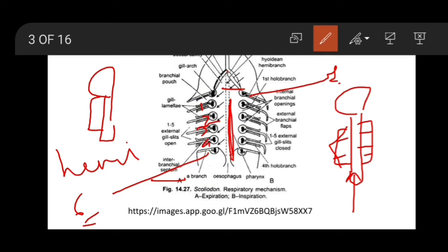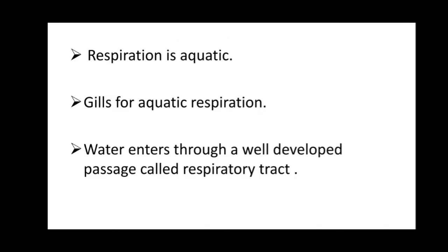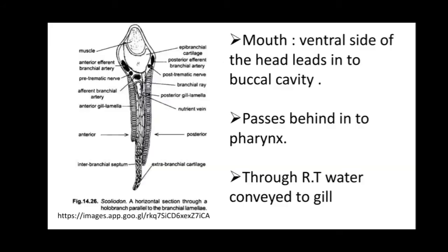Respiration in Scoliodon is aquatic. As we know, the gills are used for aquatic respiration. Water enters through a well-developed passage called the respiratory tract. The mouth is present on the ventral side of the head, which leads to the buccal cavity, and water passes into the pharynx through the respiratory tract, conveying water to the gill.